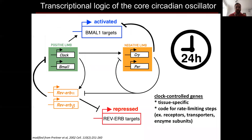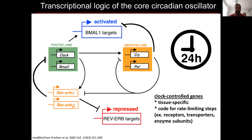Circadian clocks are molecular oscillators, and they're present in all the cells of your body. They maintain cellular time according to the rotation of the earth, thanks to interlocking transcriptional-translational feedback loops. This whole process takes about 24 hours and is occurring every day in all the cells of your body. Clock-controlled genes are additional target genes integrated into this basic feedback mechanism, and these can be activated or inhibited depending on how they respond to the different clock-related transcription factors. Gene expression profiling in different tissues over 24 hours has revealed that the vast majority of clock-controlled genes are tissue-specific, and they often code for important transporters, receptors, and rate-limiting steps in metabolic pathways.